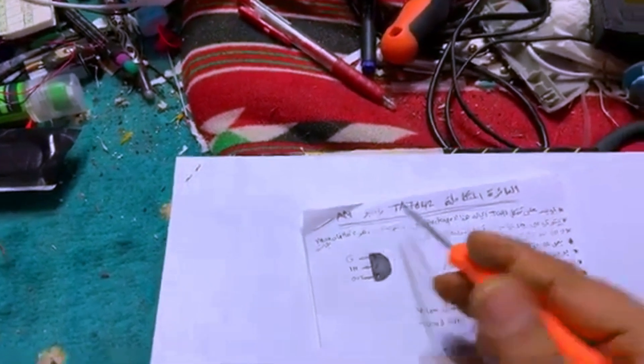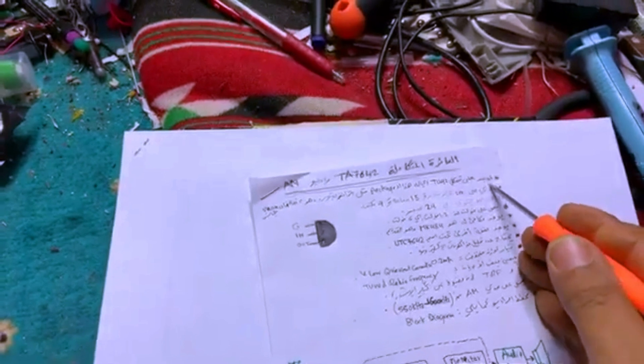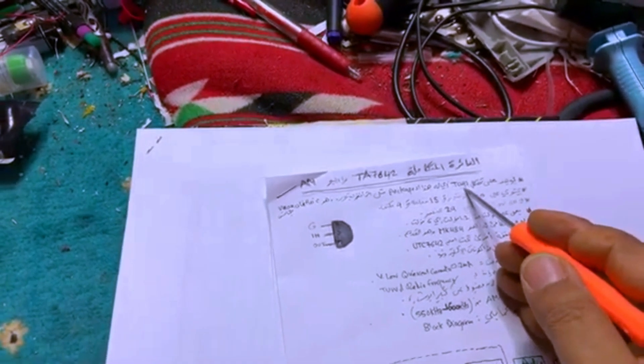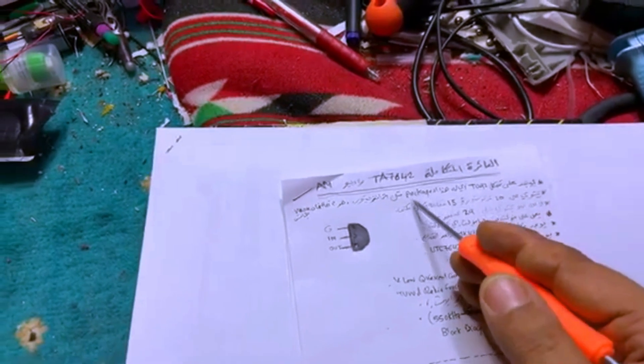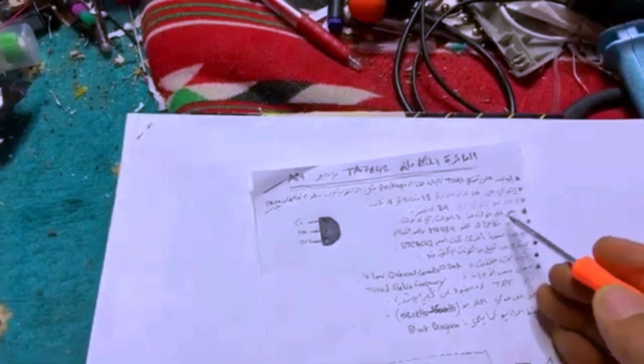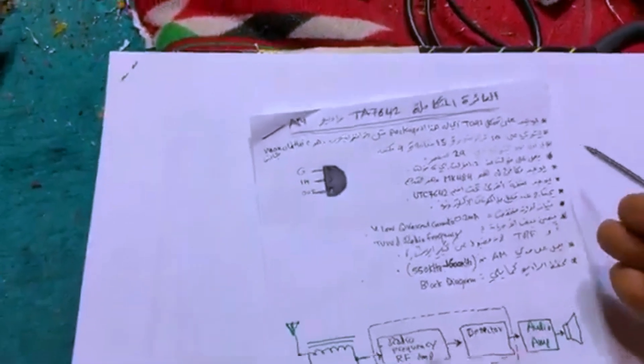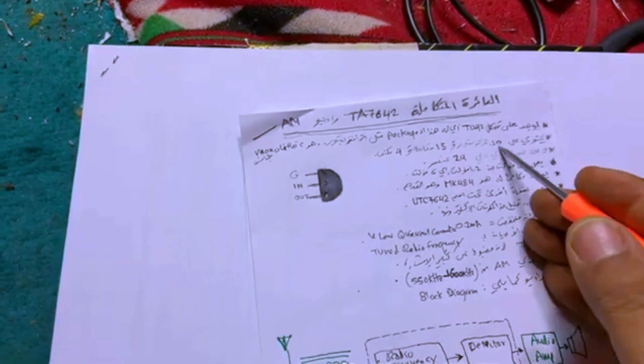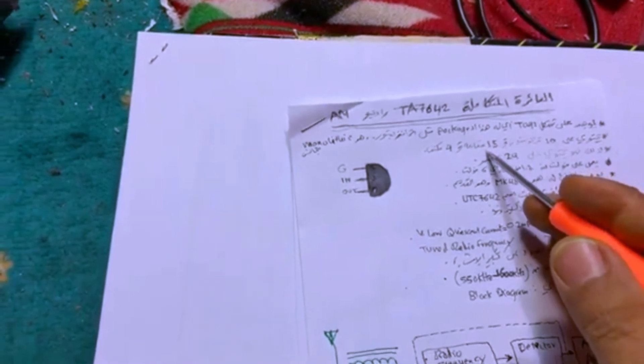It is actually in a package of TO-92, and that's the package of the transistor. It is a monolithic circuit, that's why it's just like a transistor. It contains inside equivalent of 10 transistors, 15 resistors and 4 capacitors.